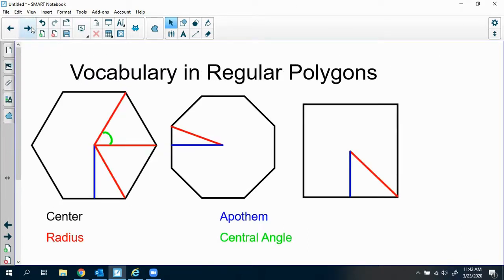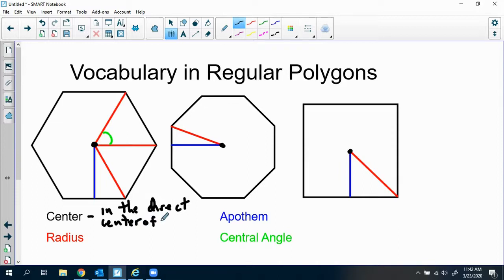In order to understand this a little bit further, we need to make sure that we understand the vocabulary that we will be using. So the center of a regular polygon is the same as you would expect in a circle or anything else. So the center is in the direct center of the polygon, and it's a point.